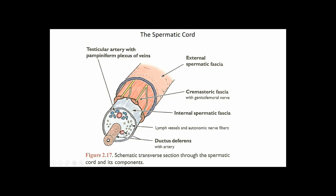The spermatic cord contains the ductus deferens with its own small artery, the testicular artery and vein, lymphatic and nerve structures innervating and draining the testes. From inside out: the internal spermatic fascia from the transversalis fascia, nothing from the transversus abdominis, the cremaster muscle and fascia layer with the genitofemoral nerve from the internal abdominal oblique, and finally the external spermatic fascia from the external abdominal oblique. Some sources note three arteries within the spermatic cord, including a separate artery supplying the cremaster muscle.